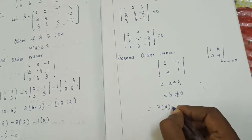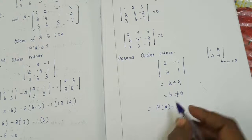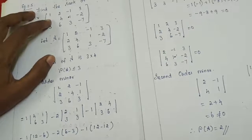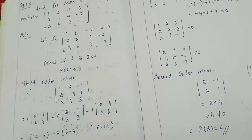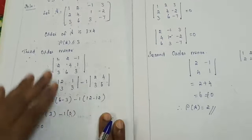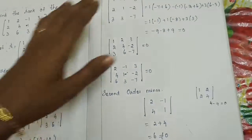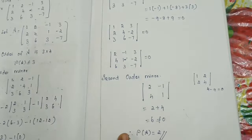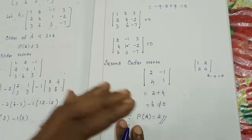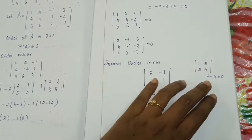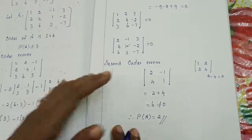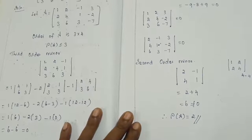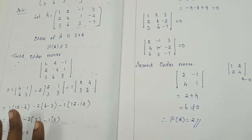Since the second order minor is not equal to 0, we conclude: rho of A is equal to 2. These are the 5 example problems in the first section. First section is now over. Next section, we are going to learn the echelon form and finding the rank of the matrix by using elementary transformation.